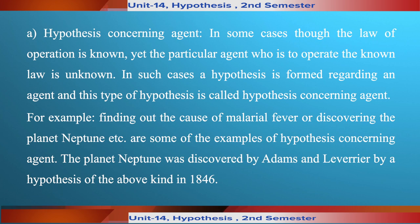For example, finding out the cause of malarial fever or discovering the planet Neptune are some of the examples of hypothesis concerning agent. The planet Neptune was discovered by Adams and Leverrier by a hypothesis of the above kind in 1846.